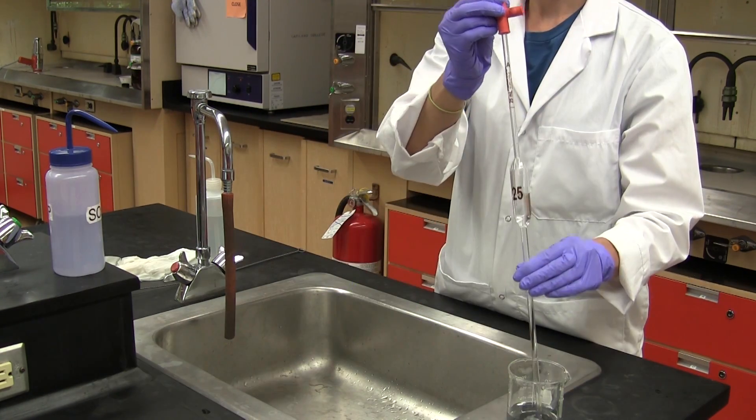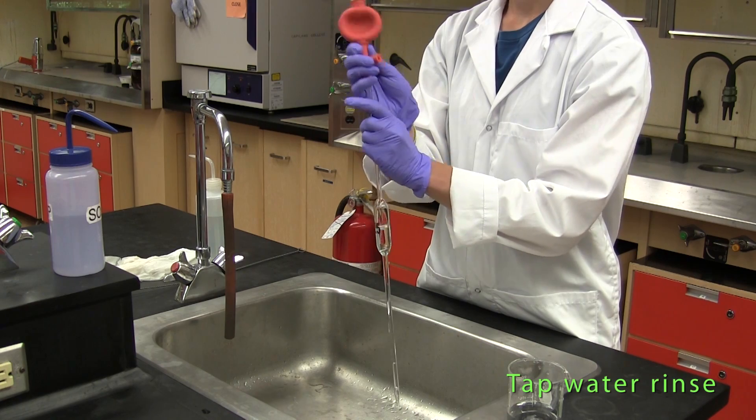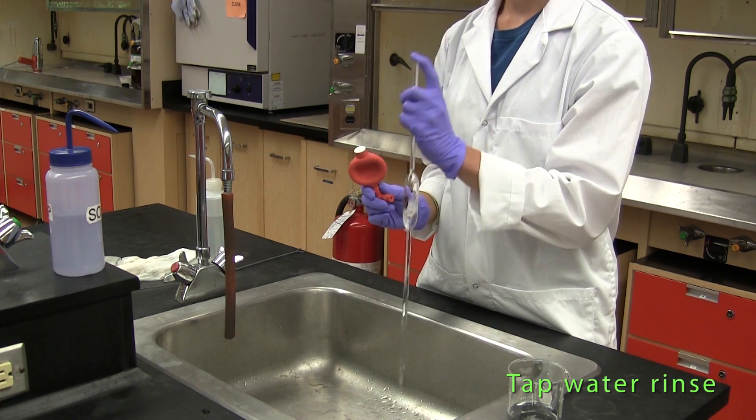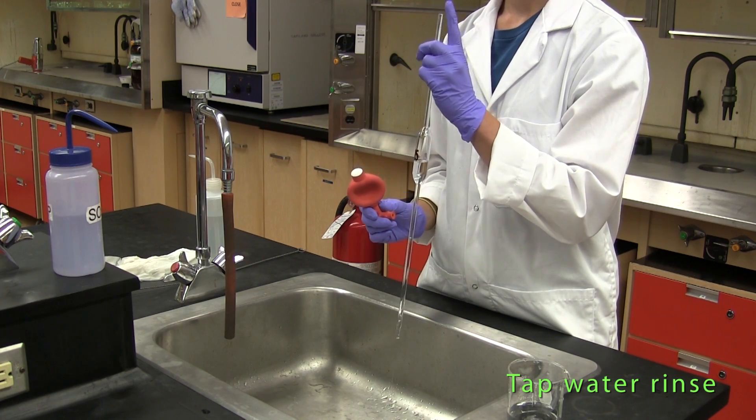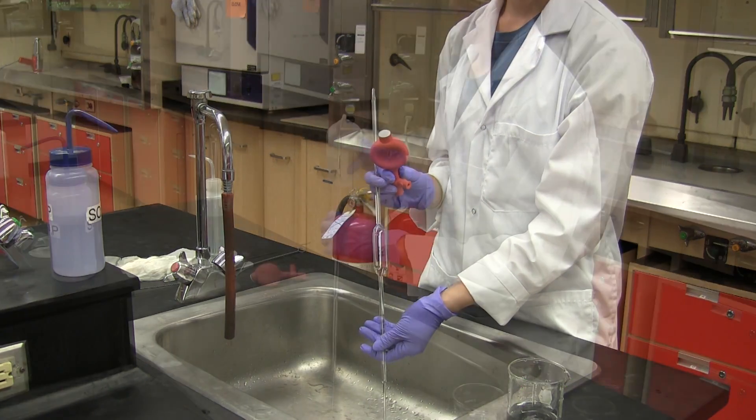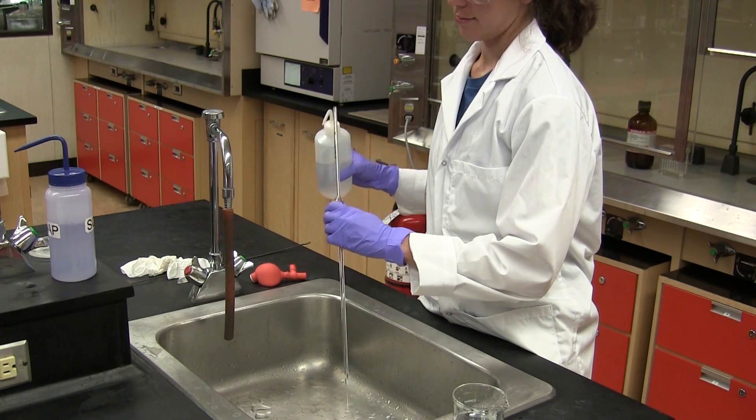The pipette is then rinsed two to three times with tap water until the detergent is completely flushed away. Finally the pipette is rinsed several times with distilled water.